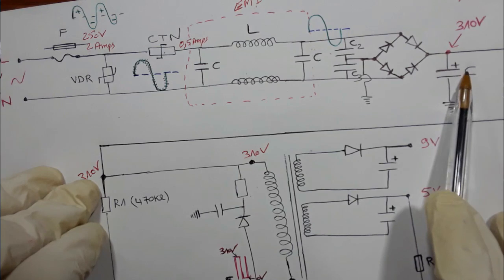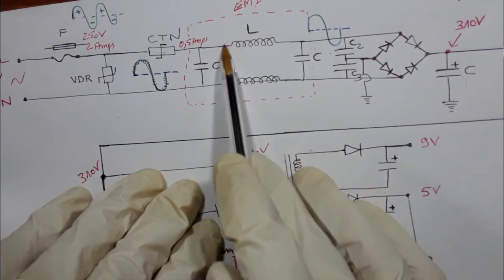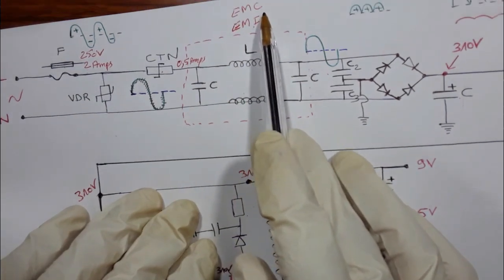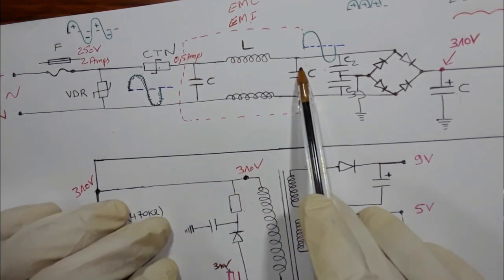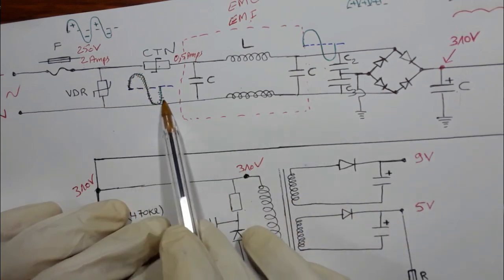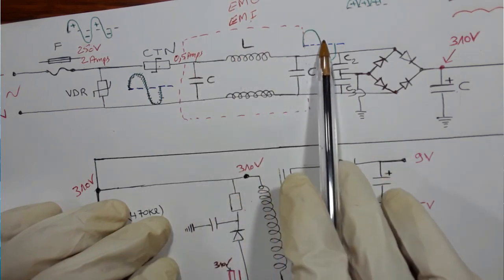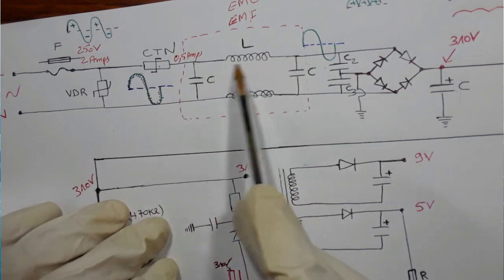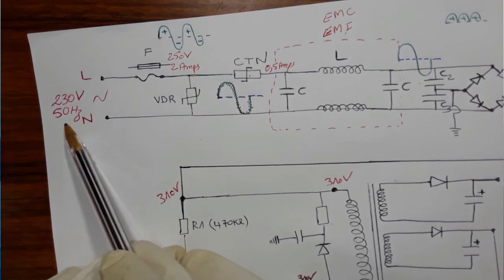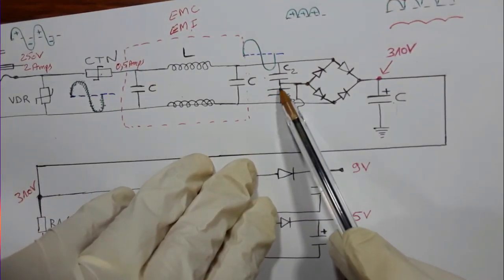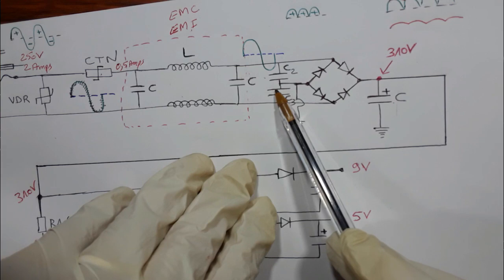Here we have two capacitors in parallel and a common mode choke — this is for electromagnetic compatibility (EMC) or electromagnetic interference (EMI). These components eliminate the high frequency noise in the signal. After the signal passes through these components, the high frequency is eliminated and only 50 hertz is allowed to pass. There is also an electric shock capacitor here to avoid electric shock.